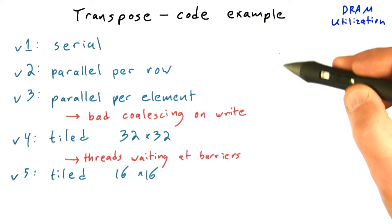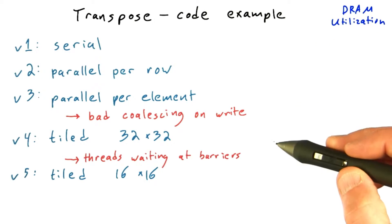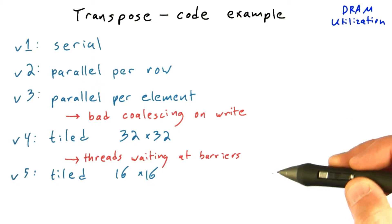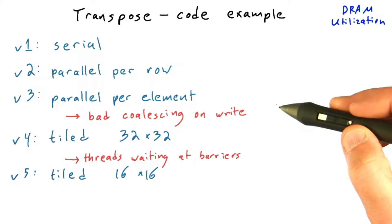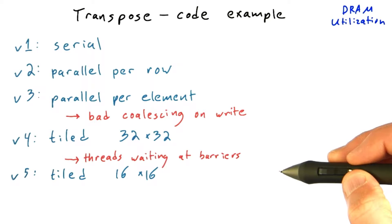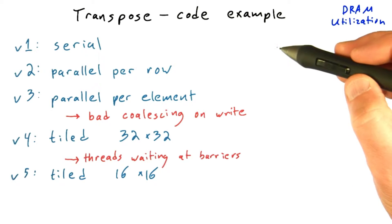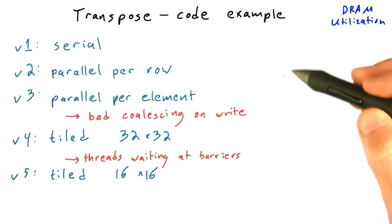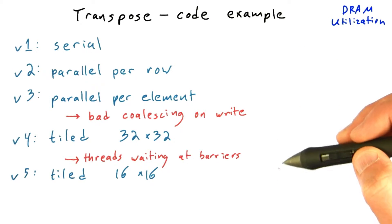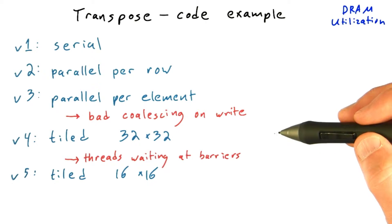Before we proceed, I want to fill in these numbers again and rerun this program to get values that correspond to what you'll see on the Udacity IDE. Until now I've been using my laptop, but we're going to let you play around with this transpose code, and I want you to see numbers that are more comparable to what you'll get on the much bigger GPUs that Udacity is using.